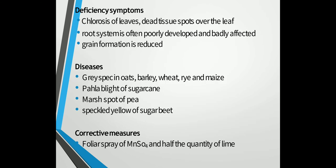Deficiency symptoms of manganese include chlorosis of leaves, dead tissue spots over the leaf, root system is often poorly developed and badly affected, and grain formation is reduced.